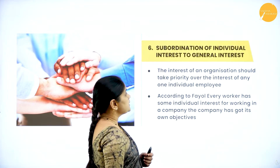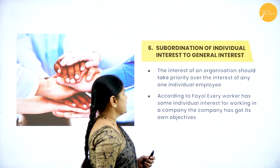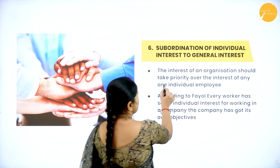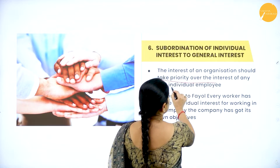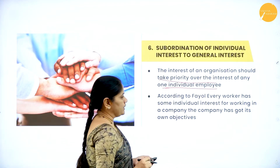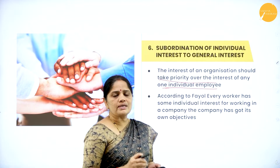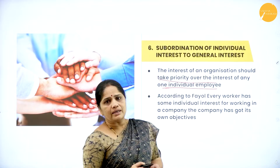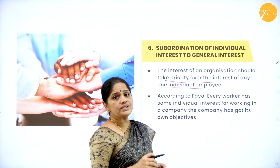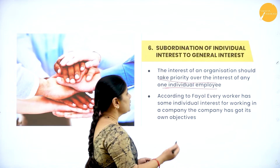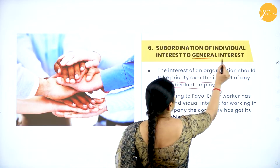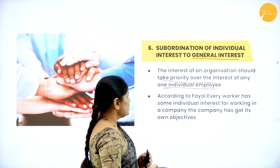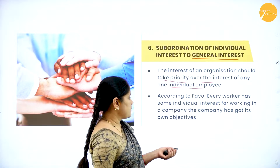Now, subordination of individual interest to general interest. This principle tells us that the interest of an organization should take priority over the interest of any one individual employee. Each employee joins an organization with their own aims, but individual interest should not become more important than the organization's interest. General interest refers to the collective interest of the organization — the needs of all stakeholders.